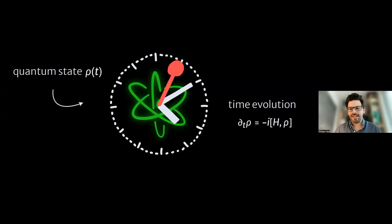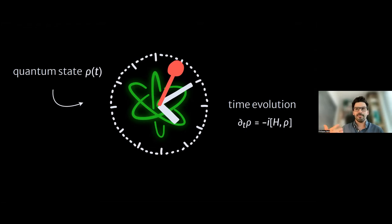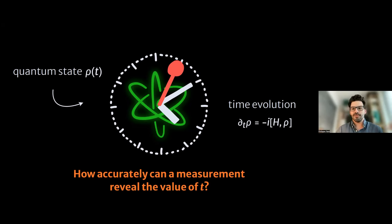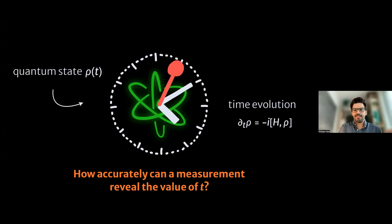Let me present the setting I'll be considering. I'll be looking at quantum systems — think of it as a quantum clock. I'm going to focus on time, but a lot of what I'll talk about applies also to other parameters. Let's imagine some quantum system, which I want to think of as a clock. It's going to be in some state ρ that evolves in time according to standard quantum mechanical evolution generated by some Hamiltonian. After some time, I'd like to perform a measurement on this clock to read out what time it is.